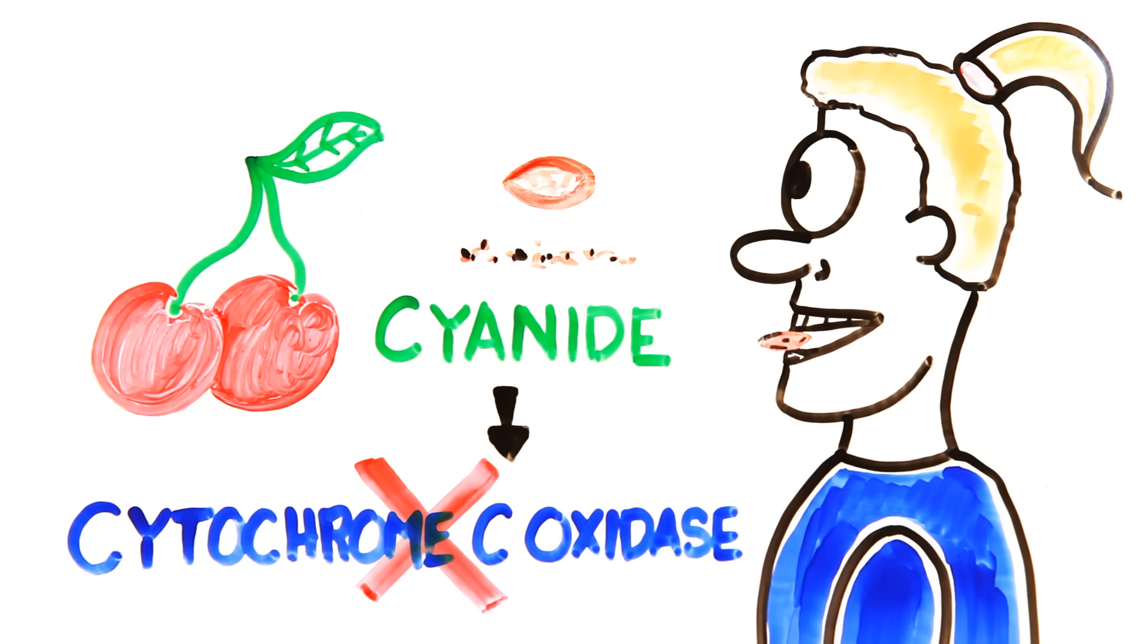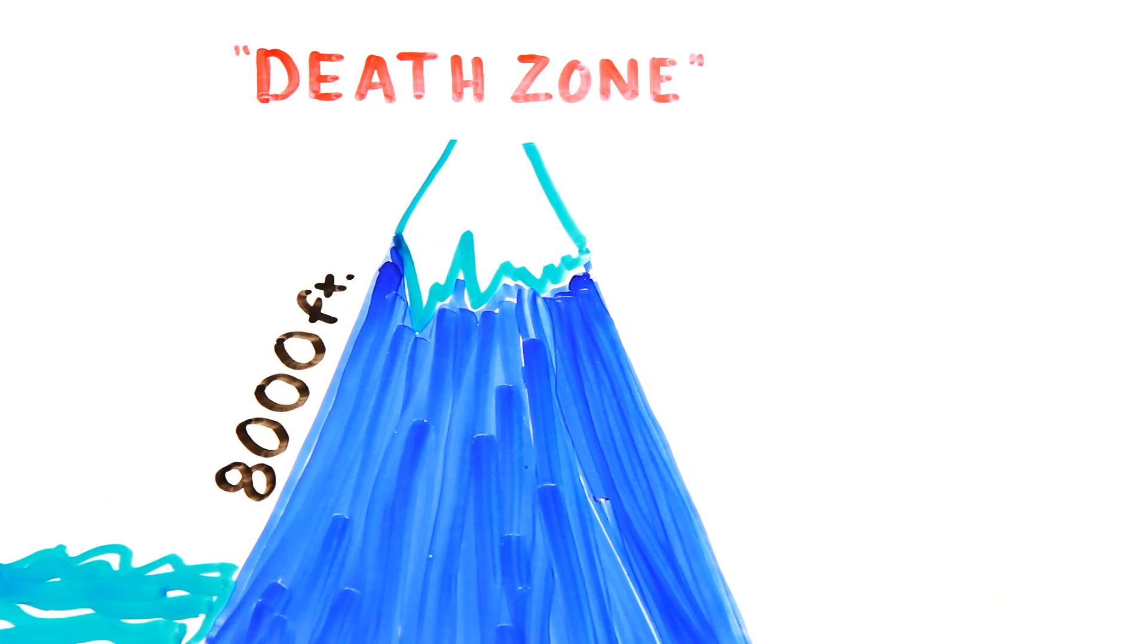Speaking of a lack of oxygen, it's at around 8,000 feet above sea level that our bodies can no longer acclimatize to the limited oxygen. This is known as the death zone in mountaineering.